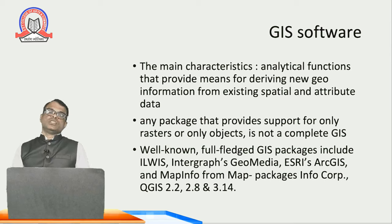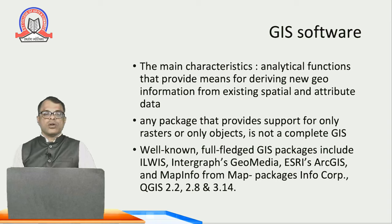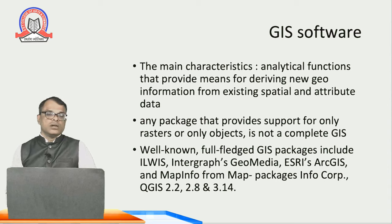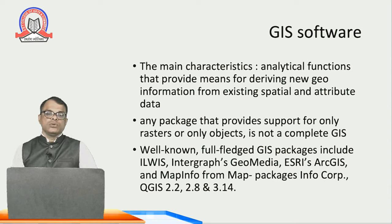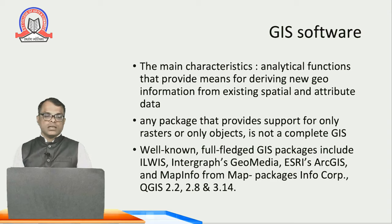Now we will discuss GIS software. The main characteristic is the analytical function that provides means for deriving new geo information from existing spatial and attribute data. Any package that provides support for only raster or only vector objects is not a complete GIS. Well-known full-fledged GIS packages include ILWIS, Intergraph GeoMedia, Eris, ArcGIS, MapInfo, and QGIS. These software packages allow you to provide your data and represent it in whichever format you require.